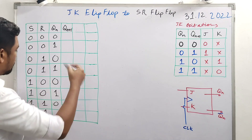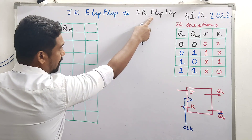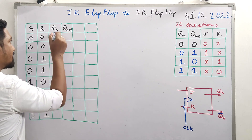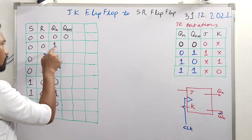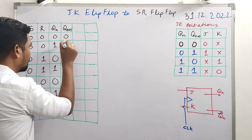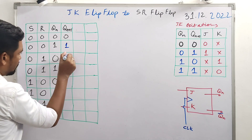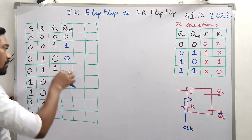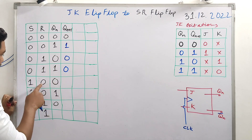Getting to the topic - the destination flip-flop is SR flip-flop, so we write its truth table. For present state 0, next state 0: no change condition, S=0, R=0. Same for present state 1, next state 1: no change, S=0, R=0. For present state 1, next state 0: reset state. Q(n+1) output will be 0.